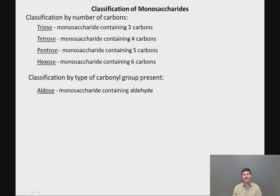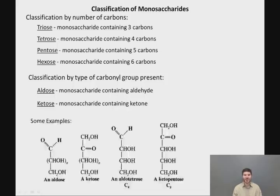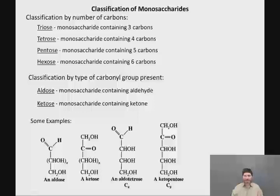We can also classify carbohydrates on the basis of what type of carbonyl group is present. Carbohydrates are polyhydroxy aldehydes or ketones, so if the monosaccharide contains an aldehyde it is called an aldose, and if it contains a ketone it is called a ketose. These schemes can be combined — for example, a C4 carbohydrate with an aldehyde is called an aldotetrose, and a C5 carbohydrate with a ketone is called a ketopentose.